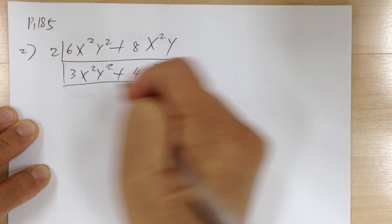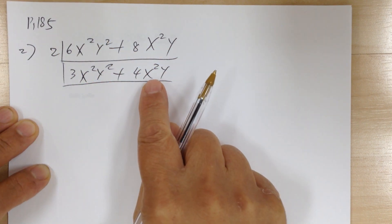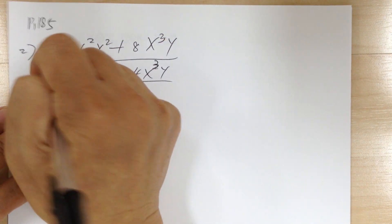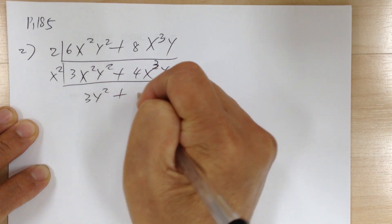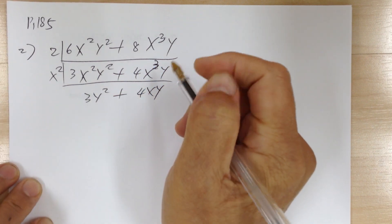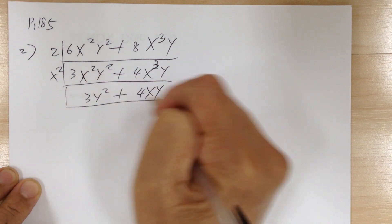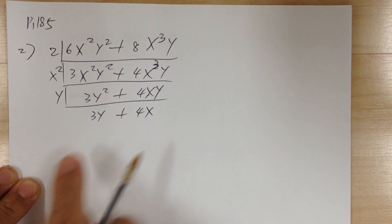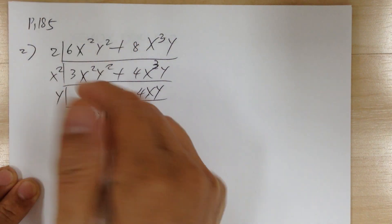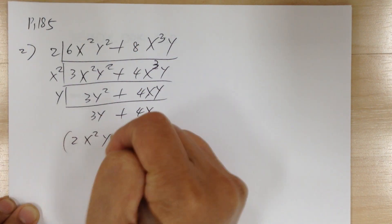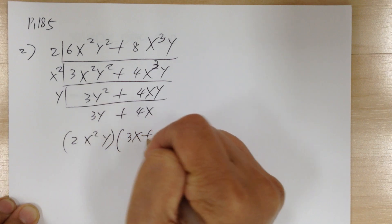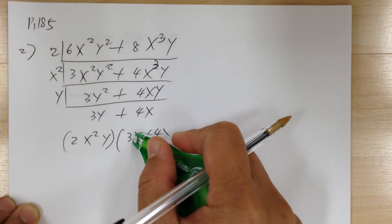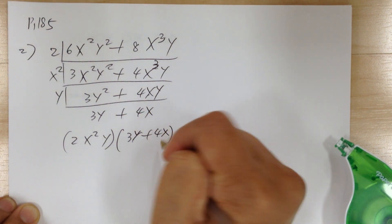Do the number then do the alphabet. You have x squared and x cubed, so you can factor out the x squared. It becomes 3y² plus 4xy. And you can factor out the y after that, so it'd be 3y plus 4x. So you get 2x²y times (3y + 4x). That's your common factor.